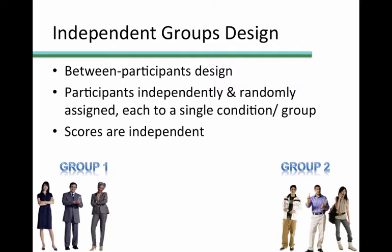In this type of design, the scores from one group are considered to be independent of the scores in the other group or groups. What we mean by independent is that the scores come from participants who likely have no sort of relationship with one another. For example, in a study of how music affects sleep quality, we may assign half of our participants to a condition in which music is played while they sleep, and the other half to a second condition in which no music is played. When we compare the scores for sleep quality between the two groups, we can say the scores are independent of each other since different participants were assigned to each condition.